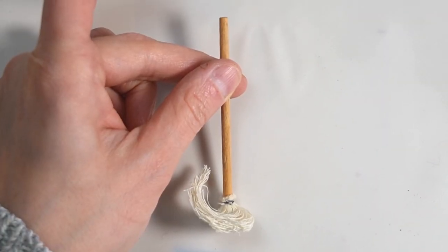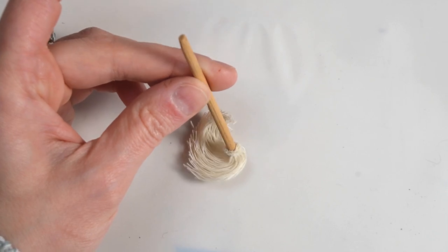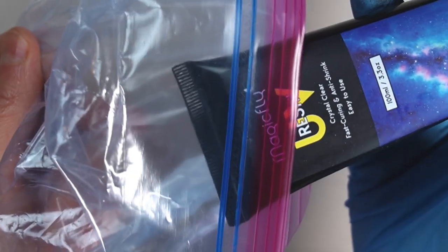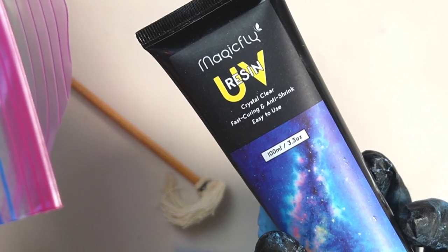The bucket is looking great and it needs a companion so the plan is to make this little mop in a puddle and I'm using some UV resin for this.